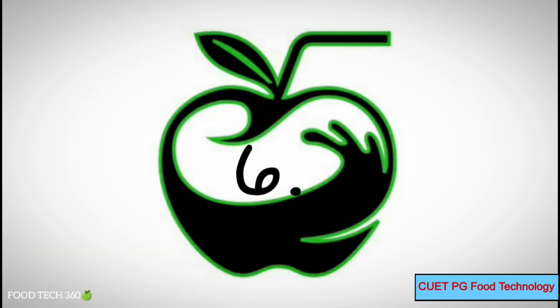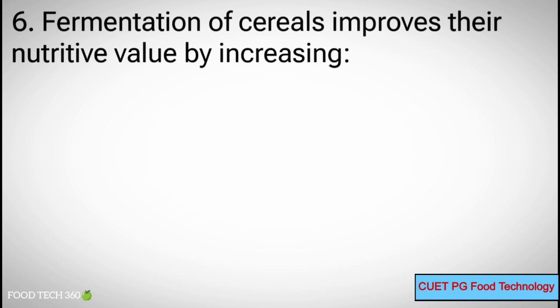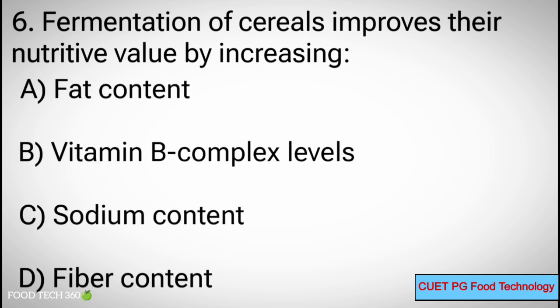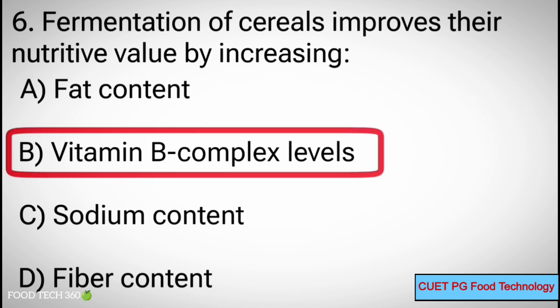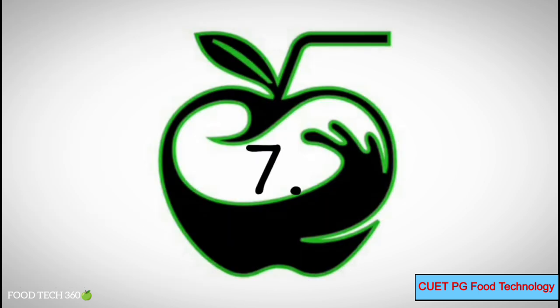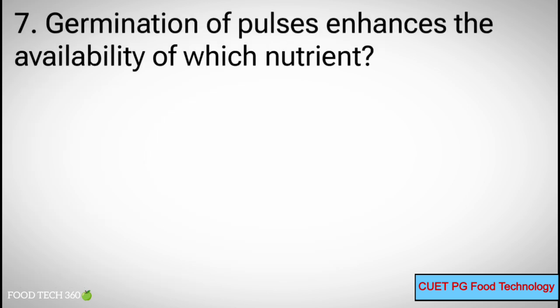Question number 6: Fermentation of cereals improves their nutritive value by increasing — Options: A. Fat content, B. Vitamin B complex levels, C. Sodium content, D. Fiber content. Correct answer: B. Vitamin B complex levels.